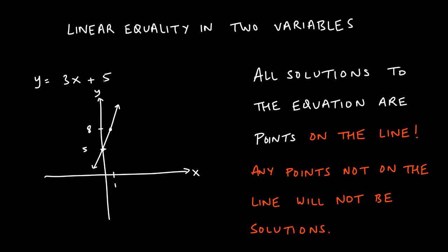If we wanted to graph this line, we could plot the y-intercept at 5 and then use the slope with a rise-over-run: rise 3 units to get to 8, then run 1 to reach the point (1, 8). That gives us two points to connect into a line. We could also graph it using intercepts — we already know the y-intercept is 5, and we can set y = 0 to find the x-intercept, then connect those dots.